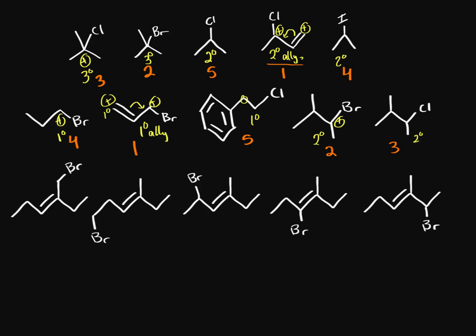The last example is a bit tricky. We have a primary allylic carbon — it forms a cation here, and with resonance stabilization you can also have a cation here, giving a primary and a secondary resonance form. This bromine gives just a primary cation with nothing more. Then this one is a secondary allylic cation — the cation forms here, the pi bond moves, and the second resonance form is actually tertiary. So we have a secondary and tertiary resonance form here.